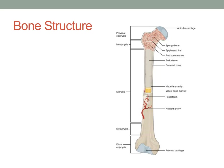The diaphysis is the shaft of the bone. The shaft of the bone contains the medullary cavity. It's composed of compact bone, and this is where it is filled with the yellow bone marrow.